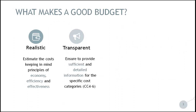Secondly, the project budget should be transparent in all its parts. Partners have to ensure they provide sufficient and detailed information for specific cost categories: cost category 4, external expertise and services; cost category 5, equipment expenditure; and cost category 6, infrastructure and works expenditure.